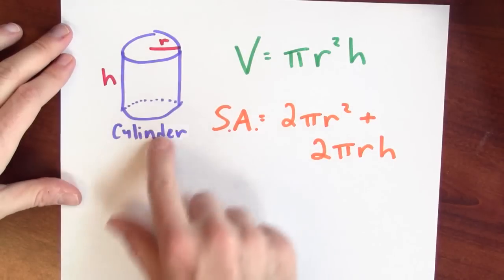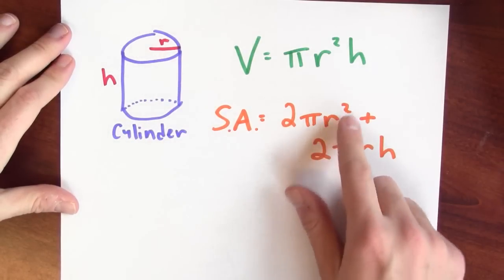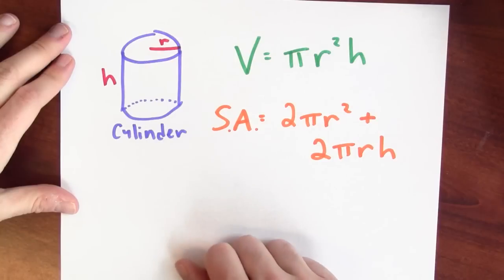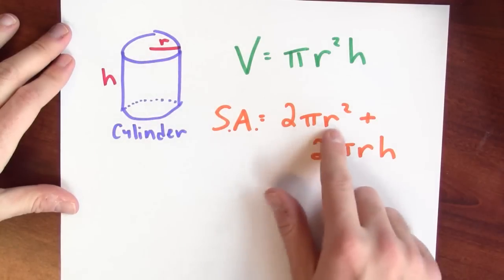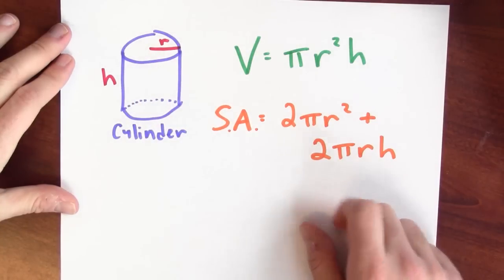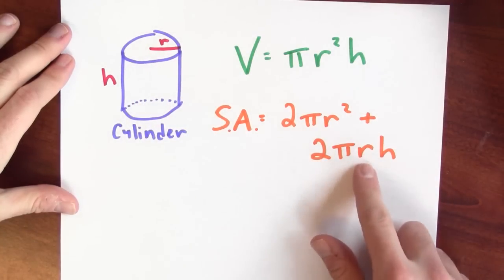What's the surface area of this cylinder? Well, 2 pi r squared counts the surface area of the top disk and the bottom disk. Each of those has pi r squared for their area, and the curved part of this cylinder has area 2 pi r h.